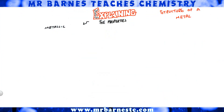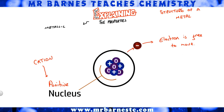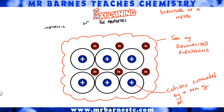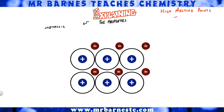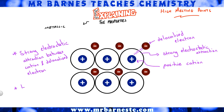On to metallic bonding. In a metal, the nucleus is positive — similar to a cation — and the electrons are free to move; we say they are delocalized. The structure is a sea of delocalized electrons. The definition of a metallic bond is cations surrounded by a sea of delocalized electrons. The delocalized electrons are negative and the cations are positive, so there are strong electrostatic attractions. This gives metals a high melting point: a strong electrostatic attraction between cation and delocalized electron, and lots of energy is needed to break those bonds.